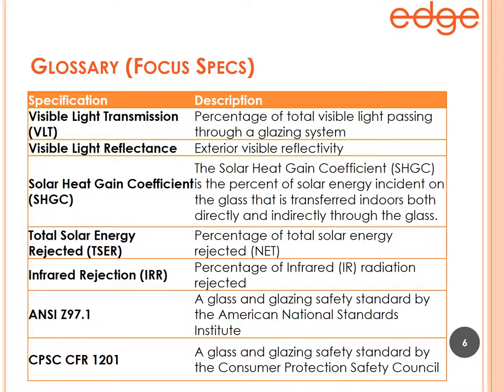Infrared radiation rejection is that portion of solar radiation defined as infrared that is rejected by the filmed glass combination. The last two are actually test methods: ANSI Z97, the American National Standards Institute glass and glazing safety standard with Category A and Category B test results; and the Consumer Products Safety Council standard, considered a more rigorous test, with Category 1 and Category 2 results. These are the focus specs most likely to come up in conversation when comparing Edge products to others.